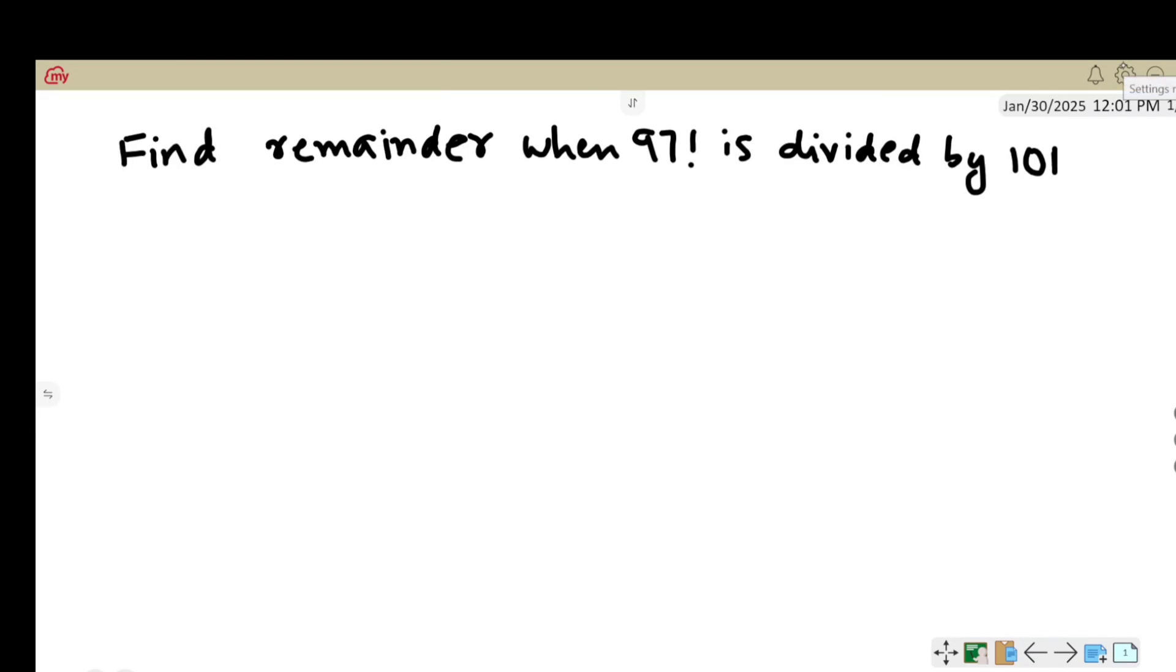Find the remainder when 97 factorial is divided by 101. I've already done a video on finding the remainder when 98 factorial is divided by 101. The link for the video is given in the description box below.